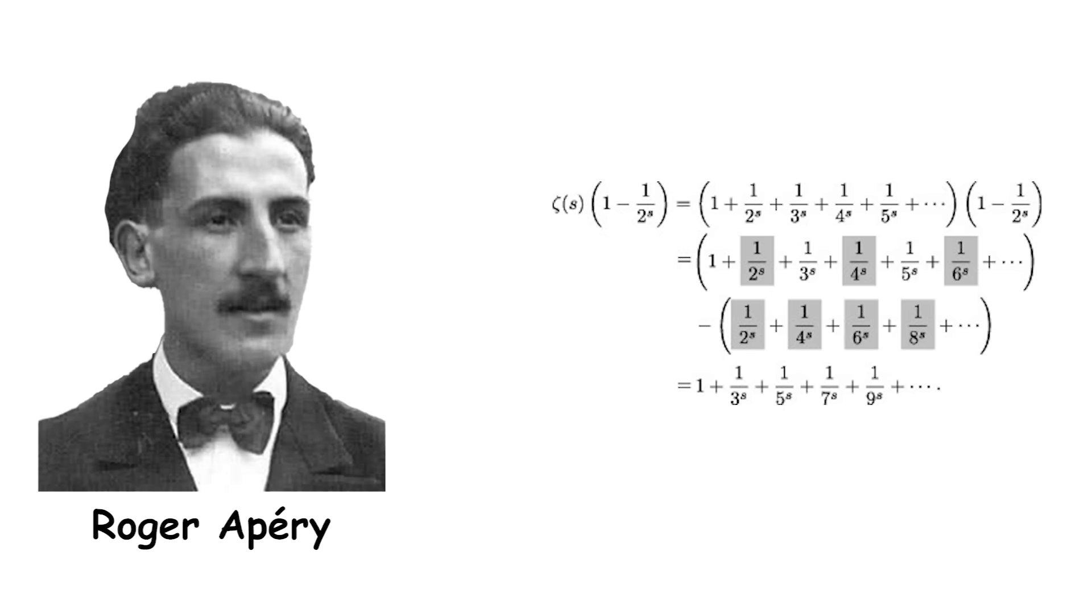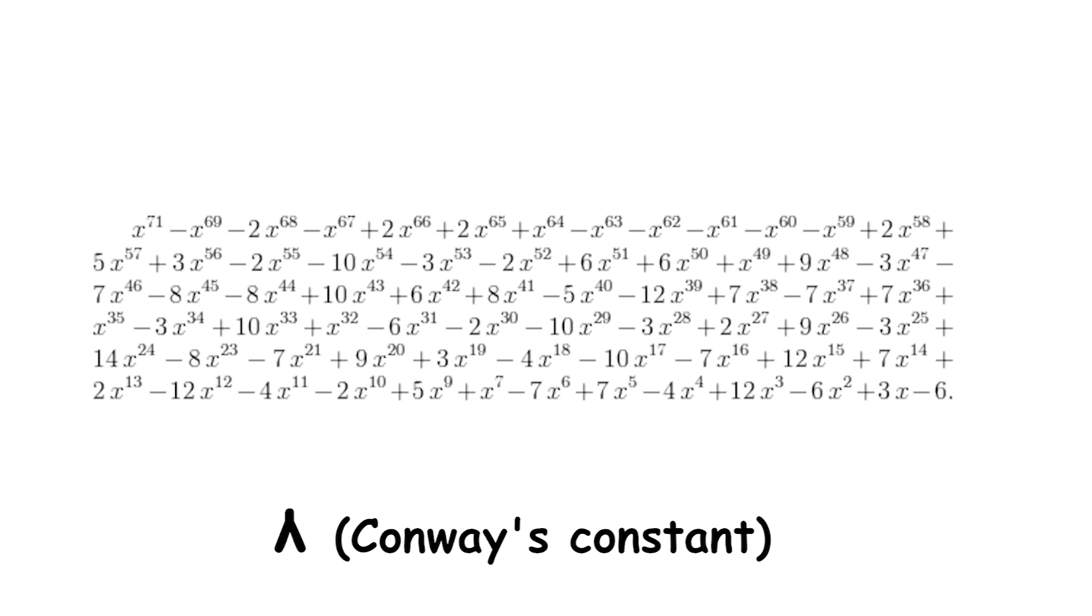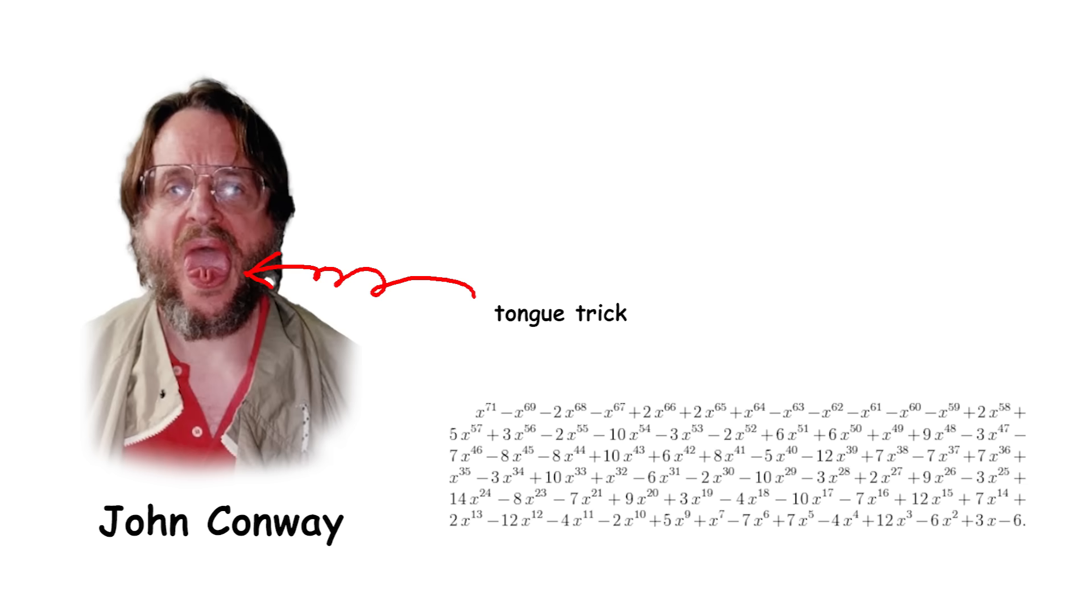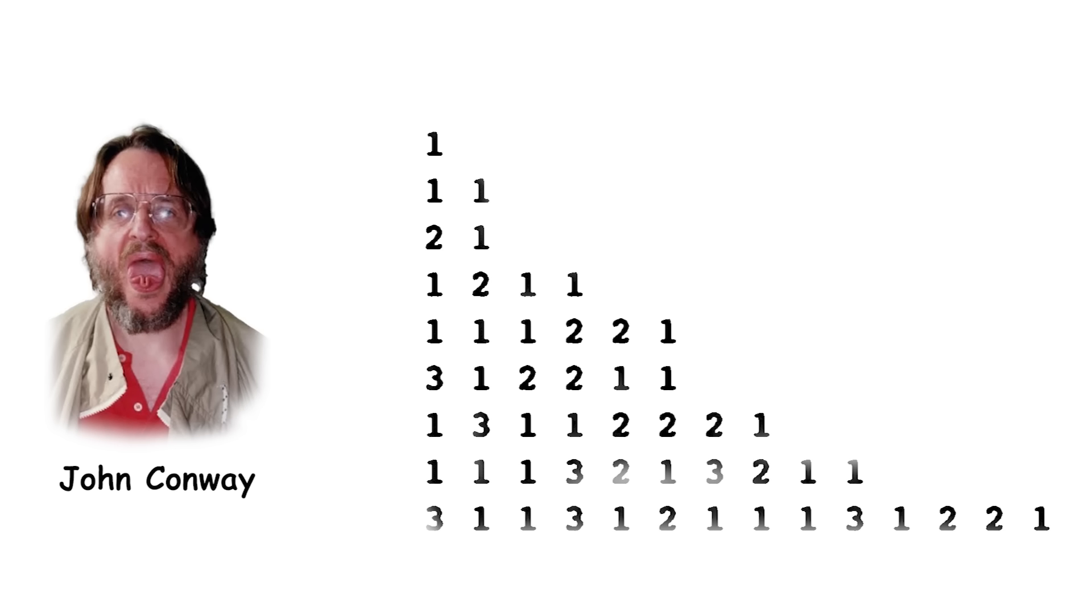Conway's constant is a mathematical constant that arises in the study of the look-and-say sequence, a mathematical sequence discovered by the renowned mathematician John Conway. The look-and-say sequence is generated by repeatedly describing the previous term in the sequence. For example, the sequence starts with the term 1, and each subsequent term is obtained by reading the previous term.